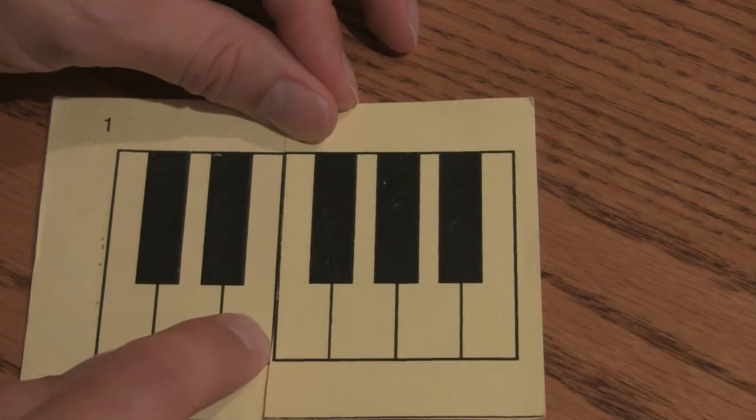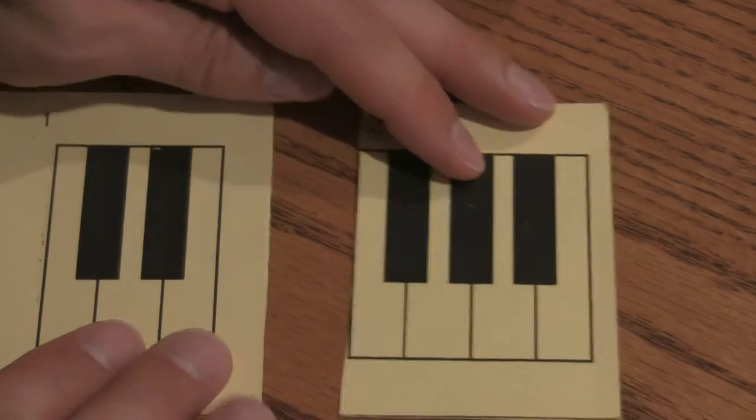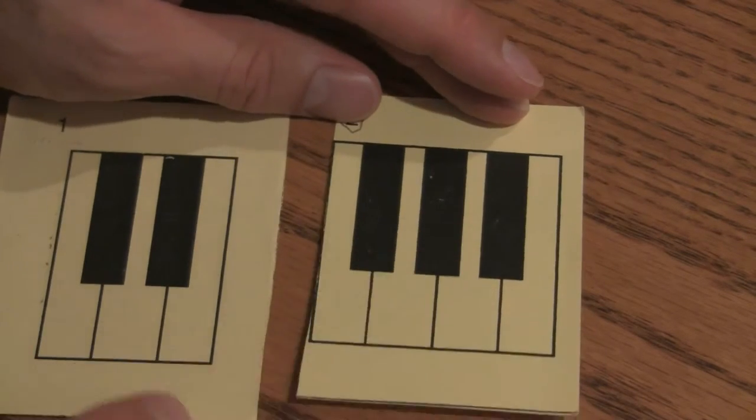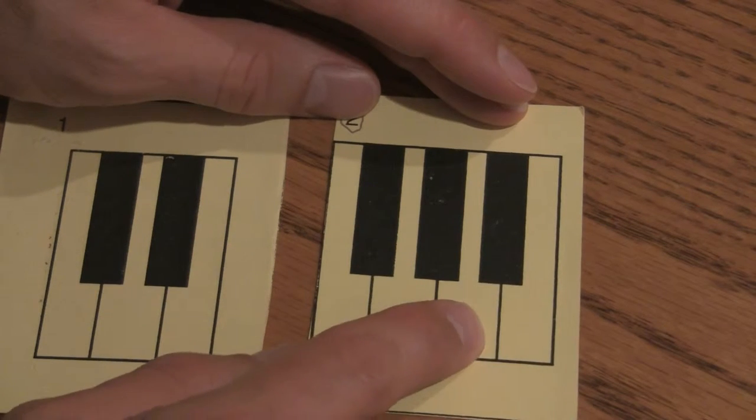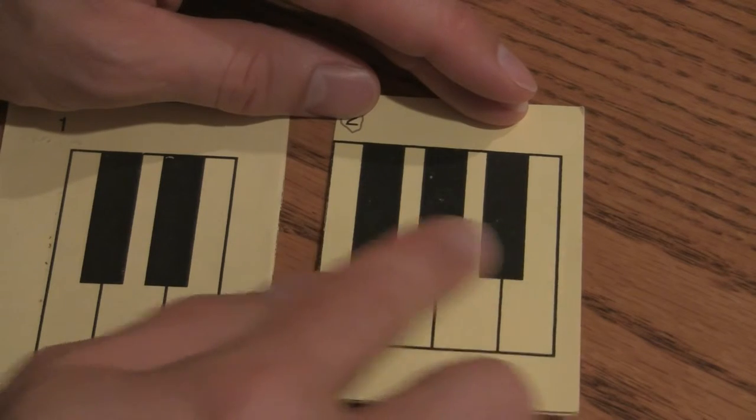C, D, E. The three blacks, the note below the three blacks is F, G, A, and B is above the three blacks.